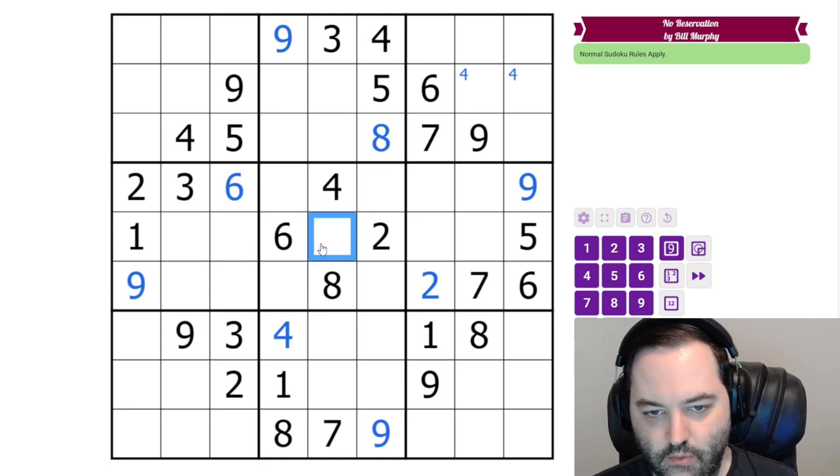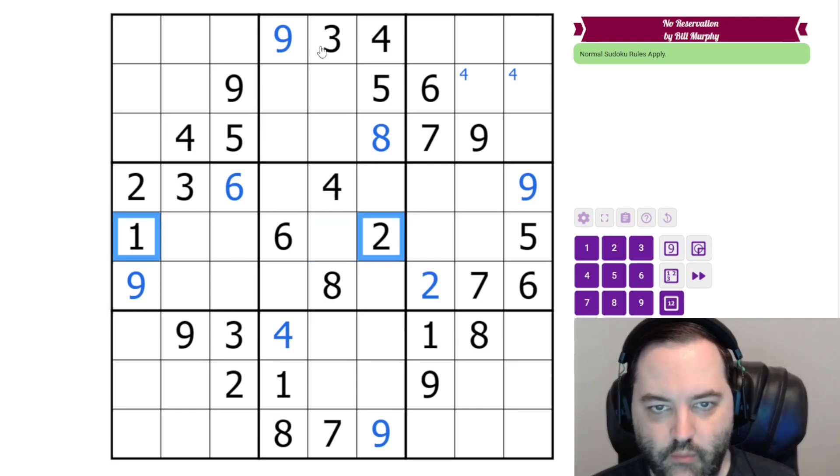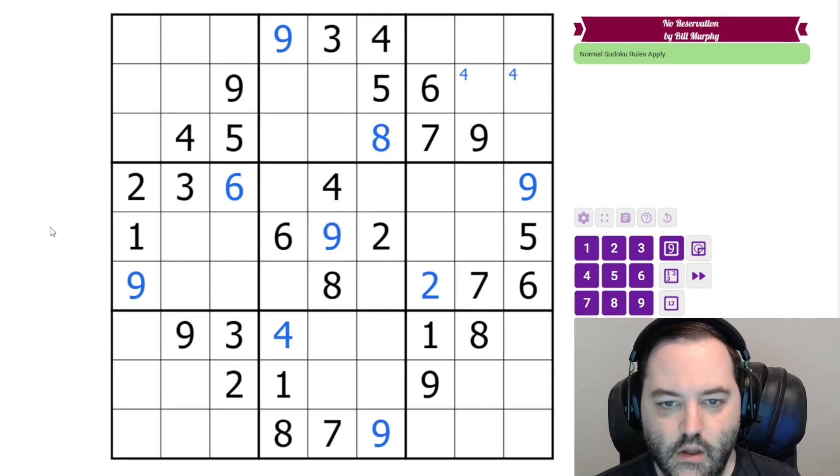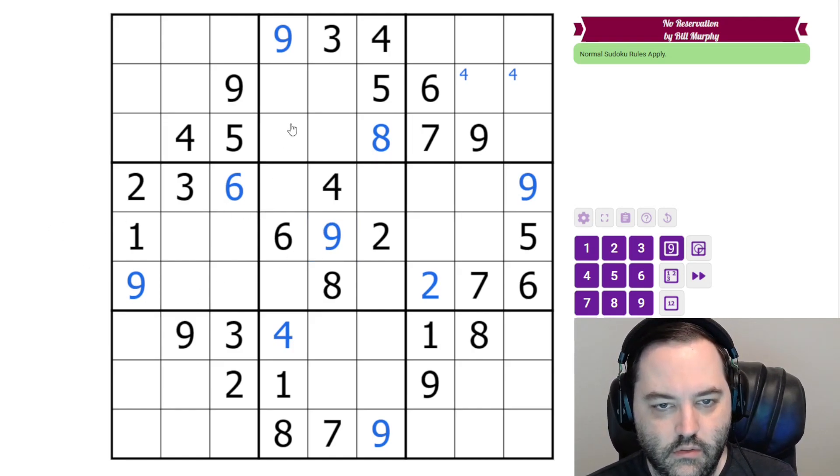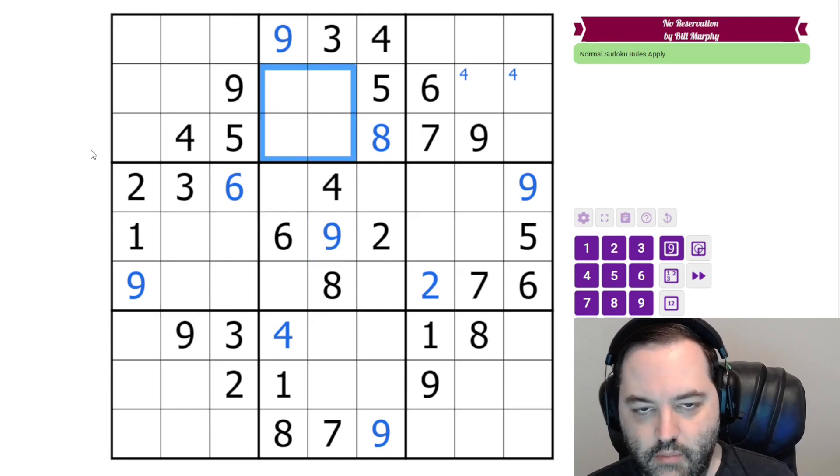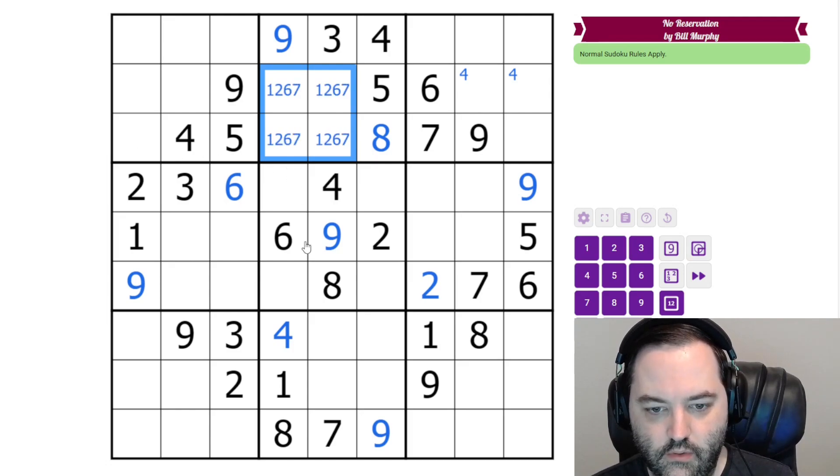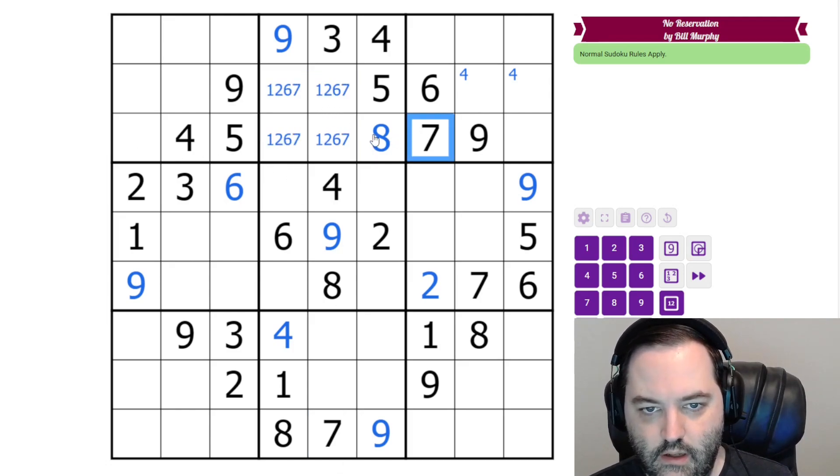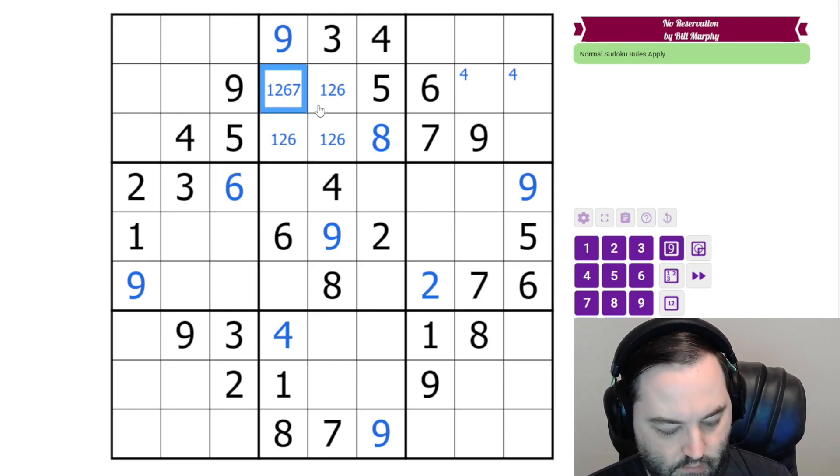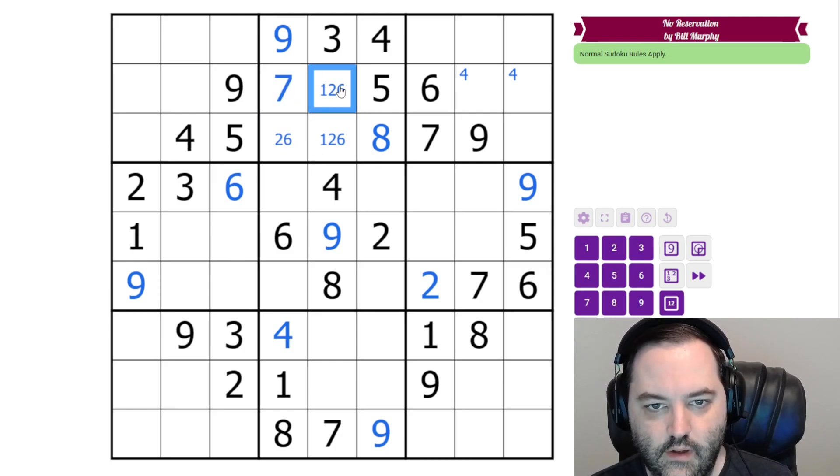And this has to be a nine for two reasons. One, it's the last place nine can go in the grid. But also we have one, two, three, four, five, six, seven, and eight, all looking at that cell. Now, looking up here, and there's six.